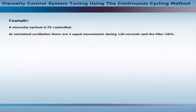Example: A viscosity system is PI-controlled. At sustained oscillation, there are five equal movements during 120 seconds, and the ultimate proportional band equals 38%. What are the settings on the PI controller?